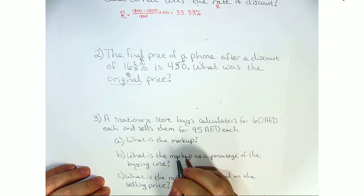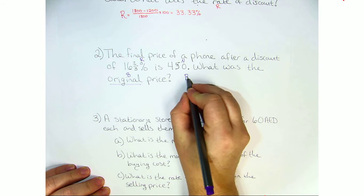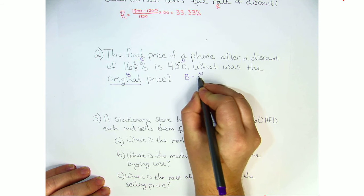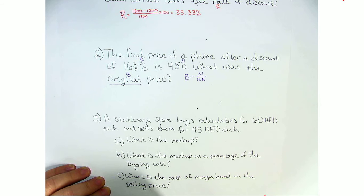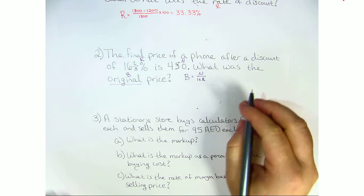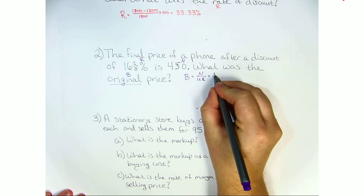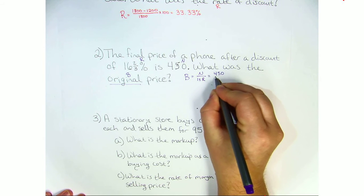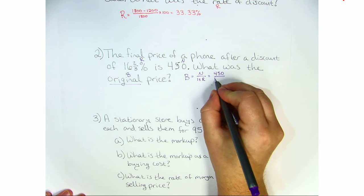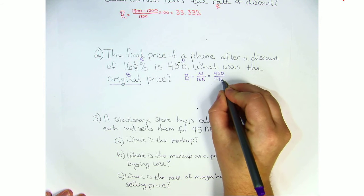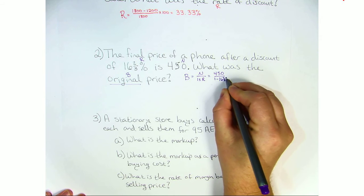Now the formula for the original price is B equals N over 1 plus or minus the rate. So we need to plug this in. N was 450 and we're going to divide by the discount, so 1 minus 16 and two thirds percent.